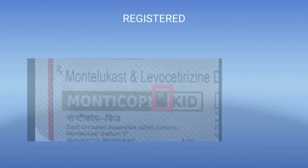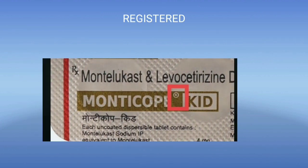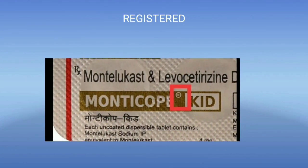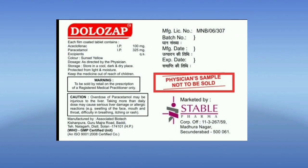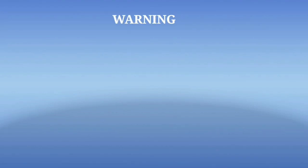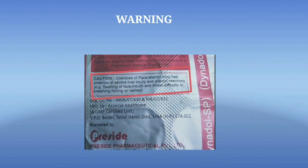The registered trademark symbol ® signifies that the trademark has been registered, and is present on the right side top of the brand name. Every drug distributed as a free sample to the medical profession should bear on the label the statement: 'Physician sample — not to be sold.'